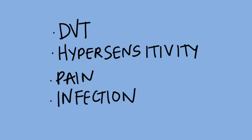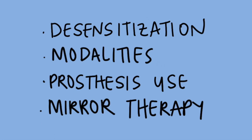Other early concerns include DVTs, hypersensitivity, pain, and infection. Most of these can be helped with medications like antibiotics and pain meds, but hypersensitivity can become more of an issue, especially when it leads to phantom limb pain. To combat this, a physical therapist can implement desensitization, modalities, prosthetic use, or mirror therapy, which are usually pretty successful.